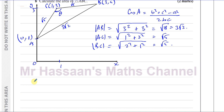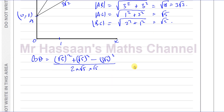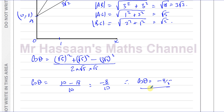Using the cosine rule with the two sides making angle C being root 5 and root 5: cos θ = (√5² + √5² − (3√2)²) / (2 × √5 × √5) = (5 + 5 − 18) / (2 × 5) = (10 − 18) / 10 = −8/10. Therefore the cosine of the angle ACB is minus 4 fifths, as required. That's part A answered.